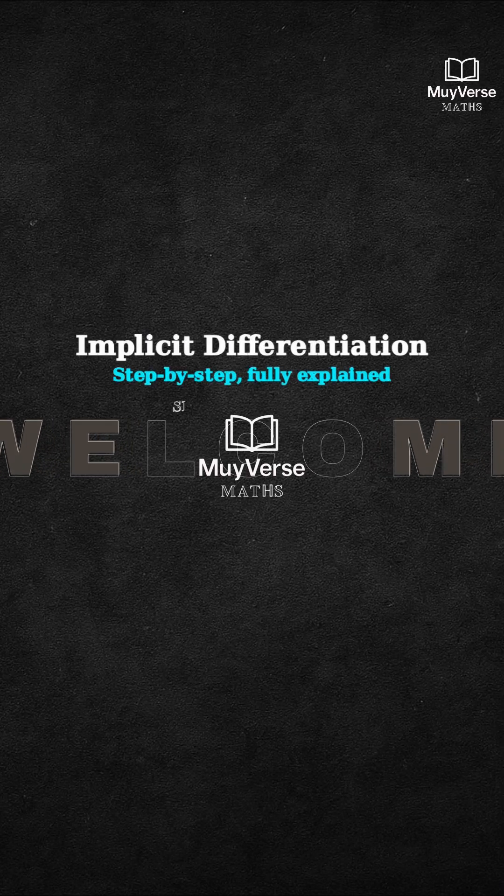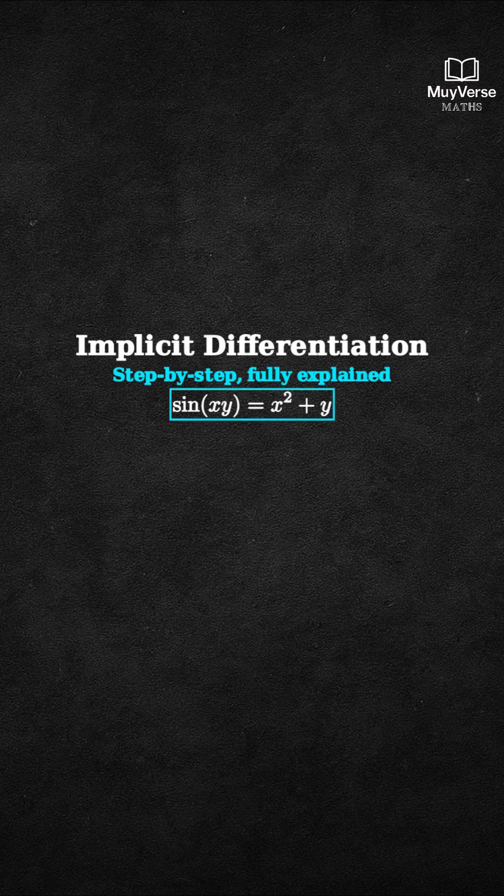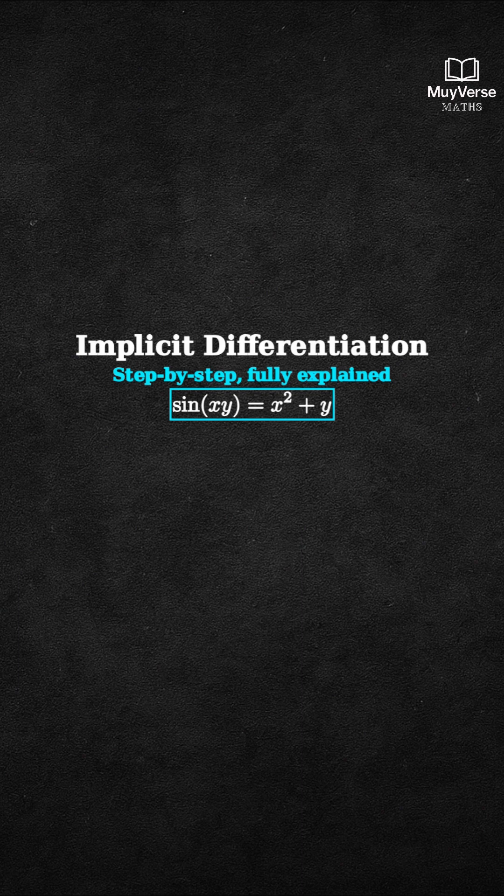Implicit differentiation. Find dy/dx for the equation sine of xy equals x squared plus y.